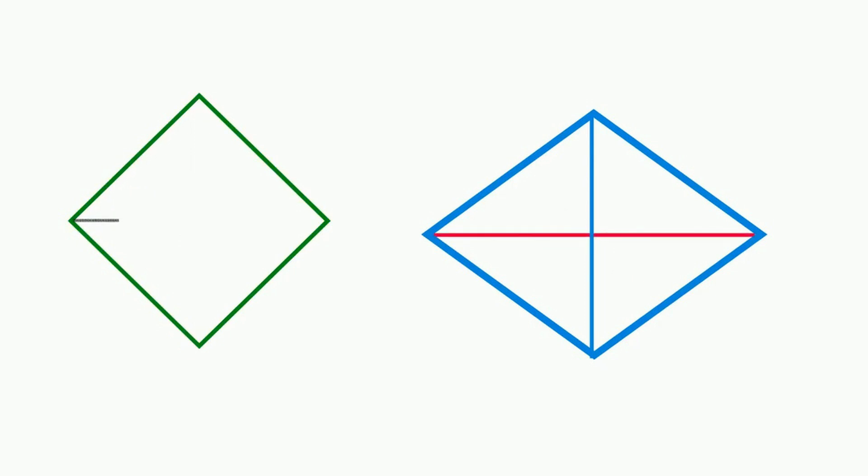The diagonals cut each other in half. In other words, they bisect each other. However, they don't have to always be the same length.